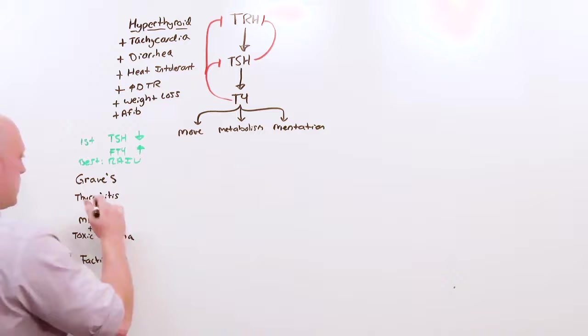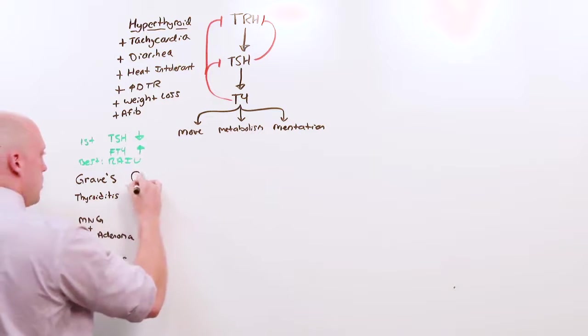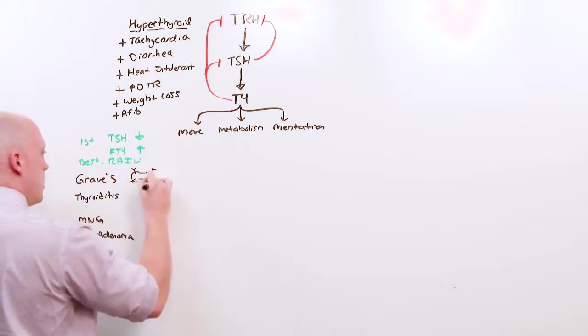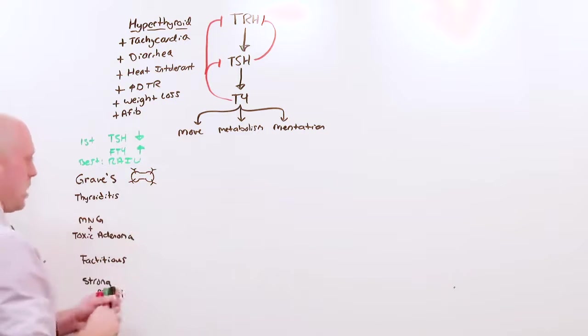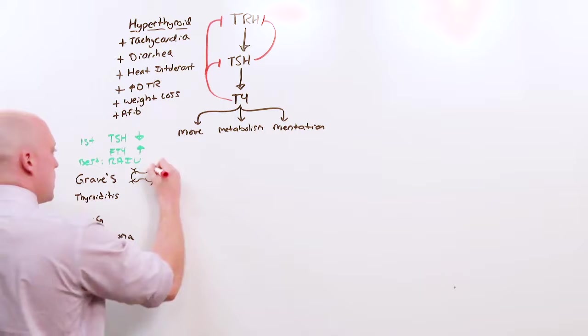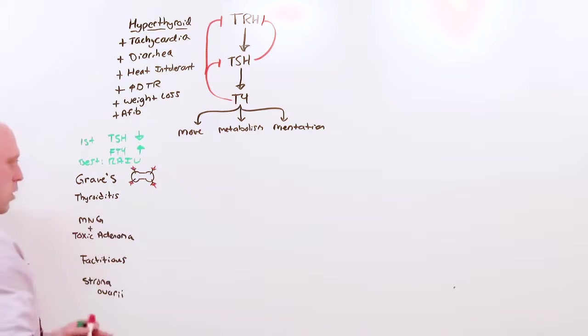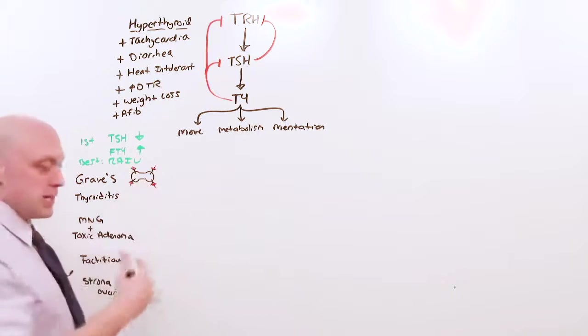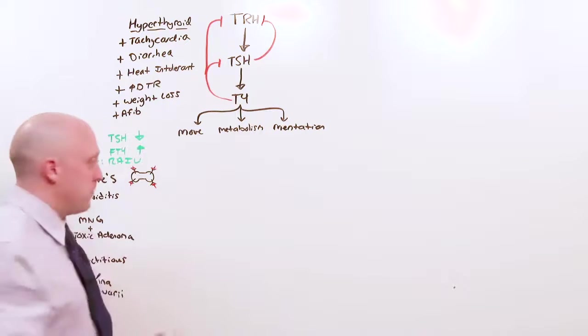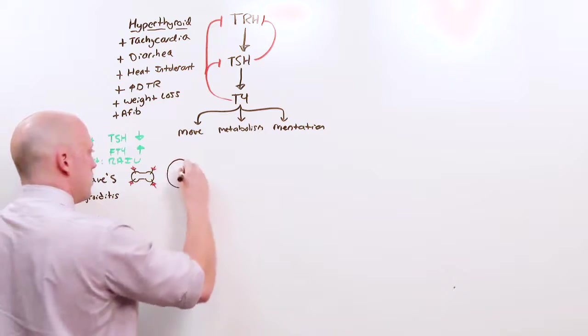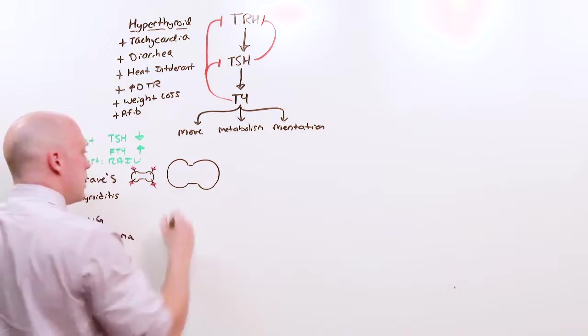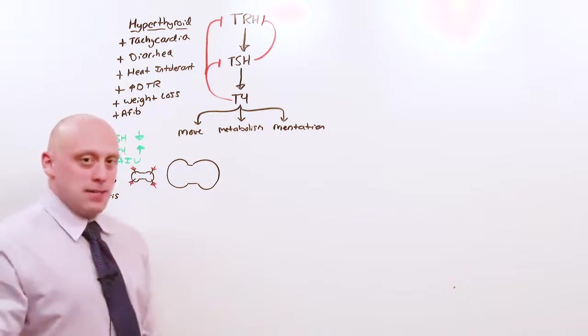In Graves' disease, you have a normal thyroid with receptors on it. Thyroid stimulating antibodies are made which activate these receptors. These receptors are all over the thyroid, and these antibodies stimulate growth and activity. So growth will be universal. You get a really big thyroid and activity.